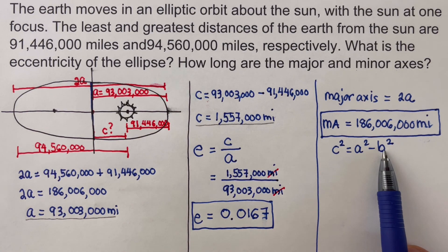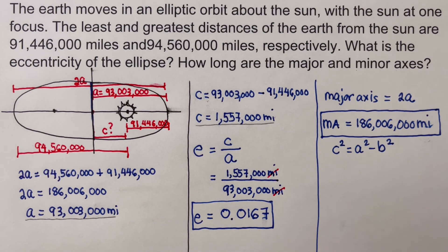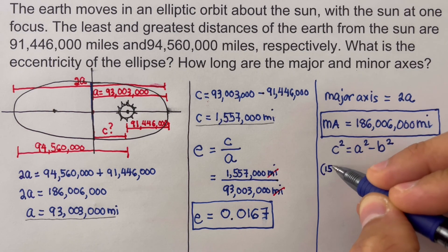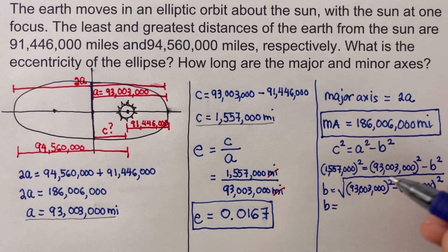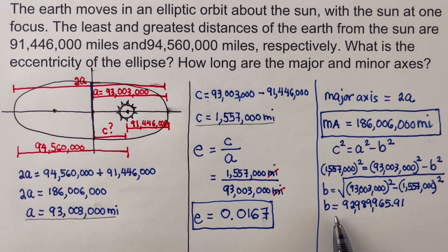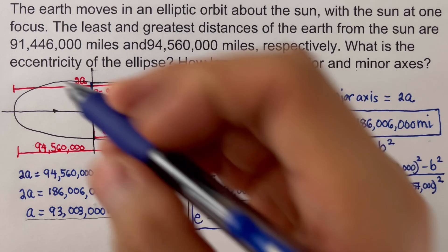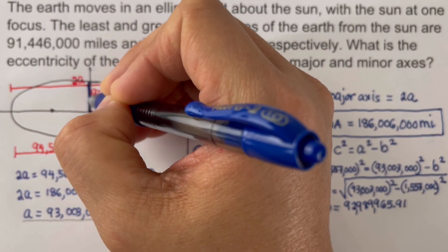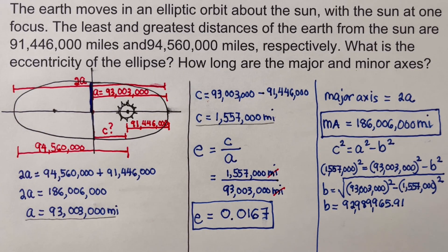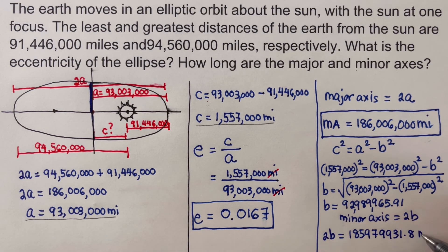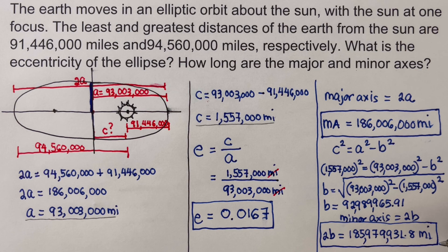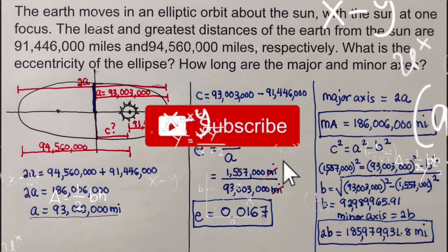Our value for b gives us the minor axis, which equals 2b. That's the value for the minor axis. If you found this video helpful, hit like and subscribe for more math videos. See ya!